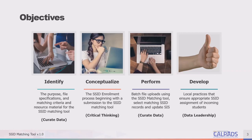It would be very helpful if you have the ability to perform a batch file upload using the SSID matching tool, selecting matching SSID records and updating your SIS. The submission of this data from one system to another, knowing which records to include or exclude, are some of the steps needed for curating data.